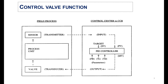A control valve basically connects two parts: the control center and the field process. In the field process, when a sensor senses the values it gives the input to the controller, where the set value — say the temperature or the pressure — is adjusted by the controller. The controller then gives the output signal to the valve through the transducer, and finally this valve adjusts our process according to our set value so that we can achieve the required process parameters and safely run our process.